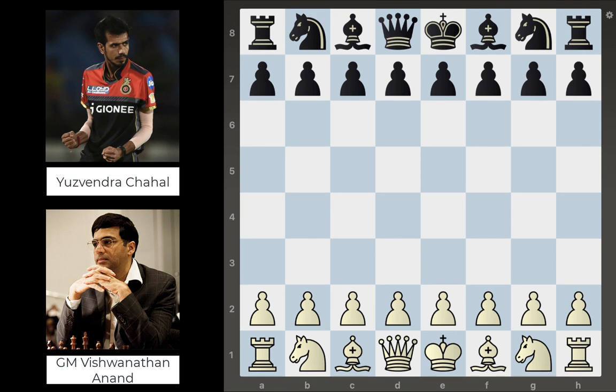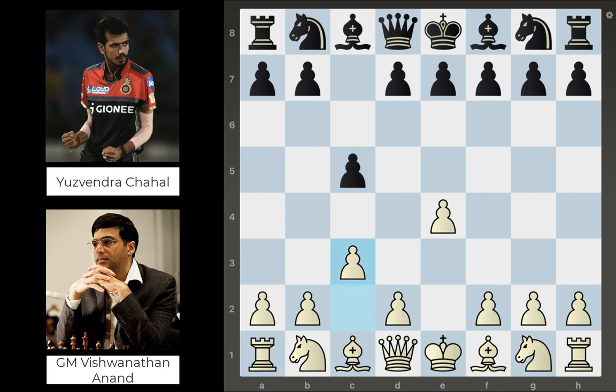Anand with the white pieces opens up with e4. Yuzi continues with c5, getting the Sicilian Defense on the board. Anand continues with c3, the Alapin variation, which is a known way to counter the Sicilian. It gives you really nice control of the d4 square, which in this particular game will actually be important.